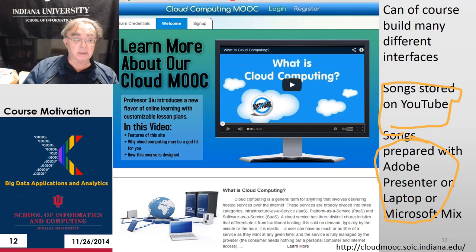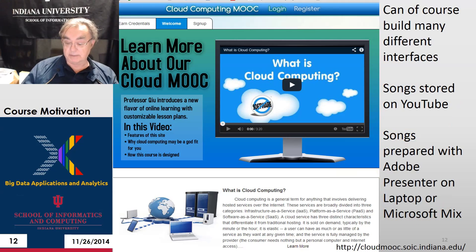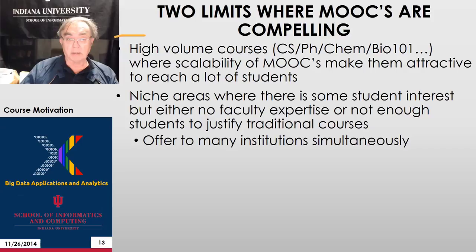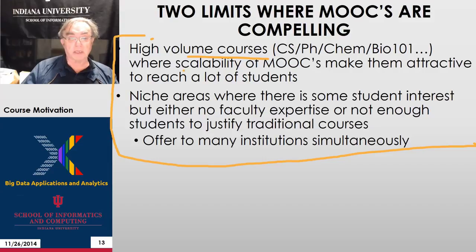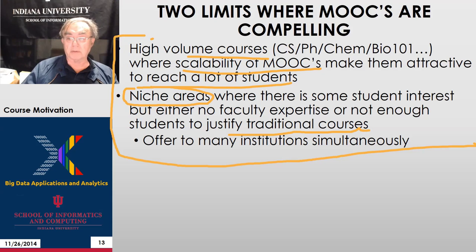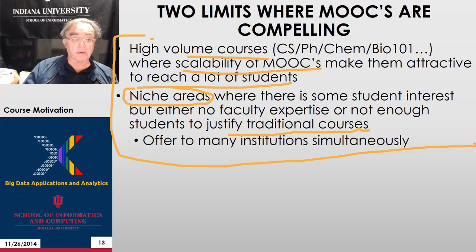You can do lots of different interfaces to these songs, which is again true of music sites — you can take the same music tracks and use lots of different websites to access them. MOOCs are particularly attractive at two limits: high-volume courses like introductory CS, physics, chemistry, and biology, where scalability makes them attractive to reach a lot of students; and niche areas where there's student interest but either not enough faculty expertise or not enough students to justify a course at individual universities, so you need to offer them across many institutions simultaneously.